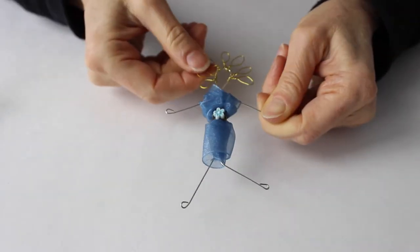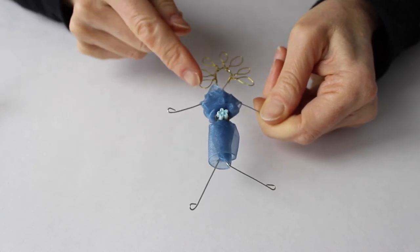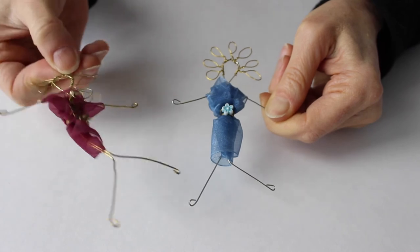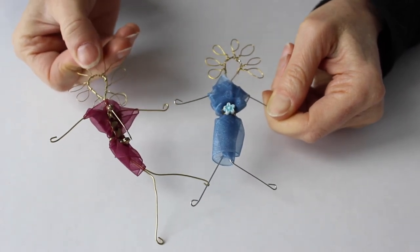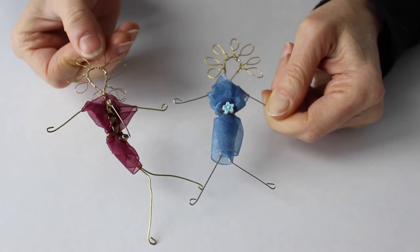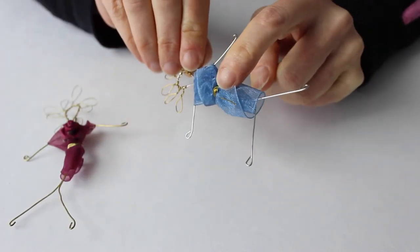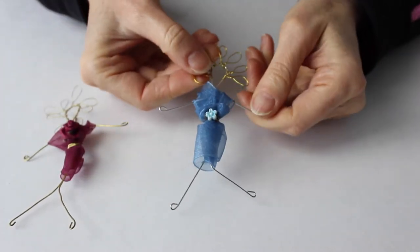Here you have your little finished girl with all her hair twisted around and her dress. If you'd like, you can stitch on a little pin form like that. I'm going to leave it free and attach these little wires to a greeting card.